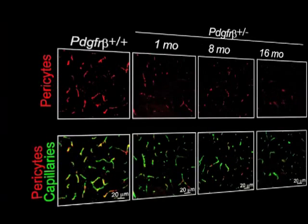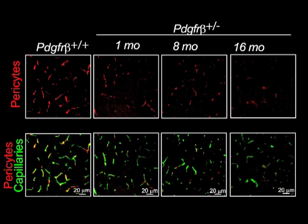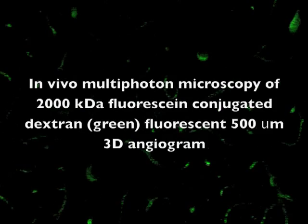My name is Robert Bell. I'm a PhD graduate student in the Zlokovic laboratory. After initially confirming a significant reduction of pericytes in one-month-old PDGFR-receptor-beta heterozygous mice, we found that the reductions of pericytes progressed as the animals aged. We then asked the question: how does a loss in brain pericytes affect the cerebrovascular system?